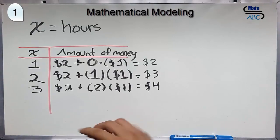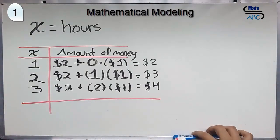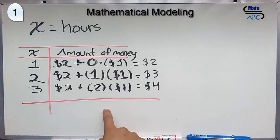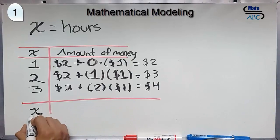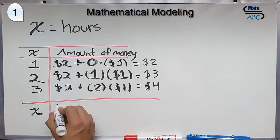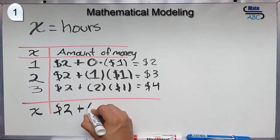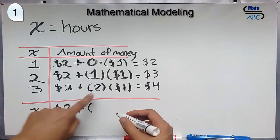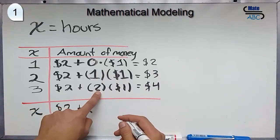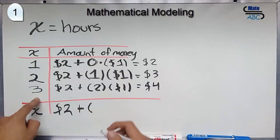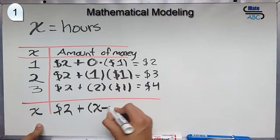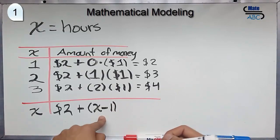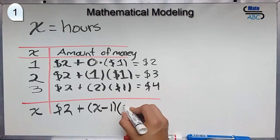As you can see here, in the general rule that you are finding here, in x hours, you will have $2 plus, as you can see here, 2 equals 3 minus 1. So, we can have, by our intuition, x minus 1 times $1.